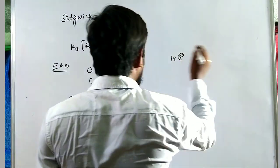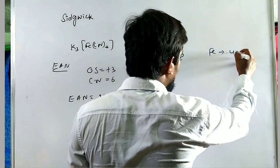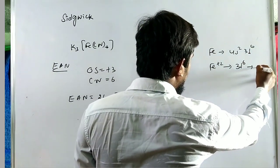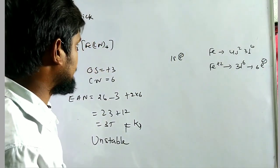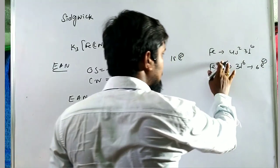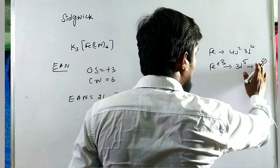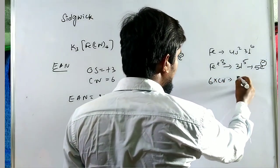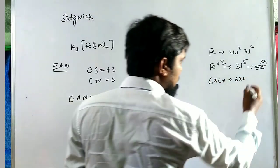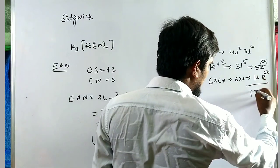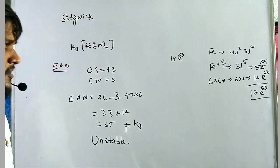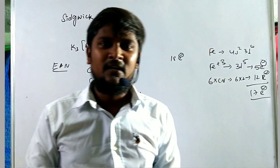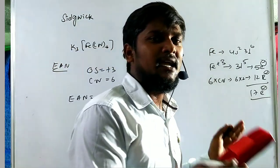Verifying K3[Fe(CN)6] with the 18-electron rule: iron's configuration is 4s², 3d⁶. In the Fe³⁺ state, it becomes 3d⁵ — that is 5 electrons. Six cyanide ions donate 12 electrons. Total = 5 + 12 = 17 electrons. Since 17 ≠ 18, the complex is unstable. The 18-electron rule confirms: 18 electrons = stable, 17 electrons = unstable.